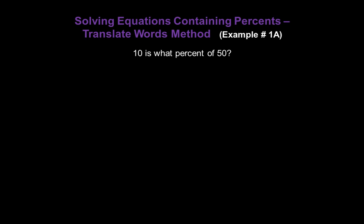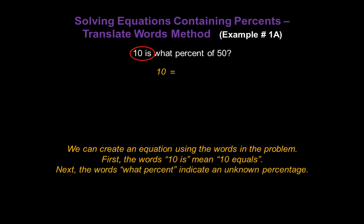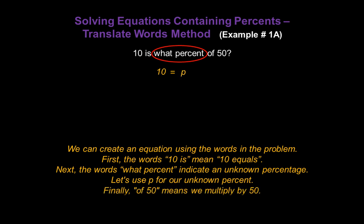Let's start with method number one: translating words into an equation. Consider: 10 is what percent of 50? We can create an equation using the words in the problem. The words '10 is' mean '10 equals,' so let's start writing our equation by putting down 10 equals. Next, the words 'what percent' indicate an unknown percentage — let's use p in our equation for that unknown percent.